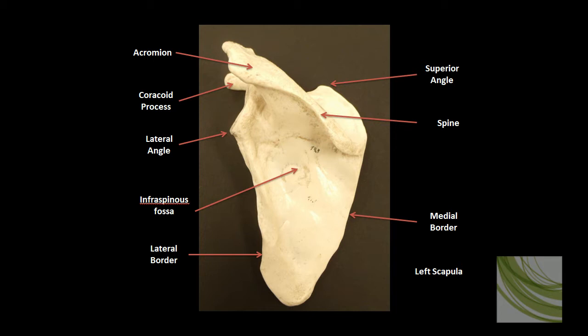The first anatomical structure we will look at is the acromion. The acromion is the point of attachment for the deltoid and trapezius muscles and articulates with the clavicle. Here we can see the coracoid process, which is on the anterior side of the scapula.